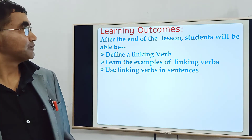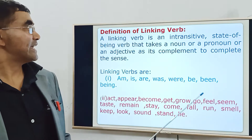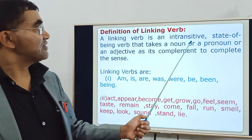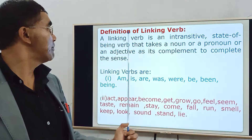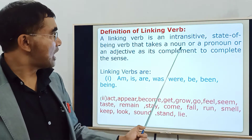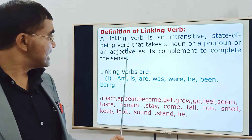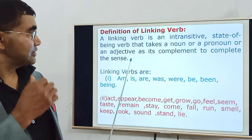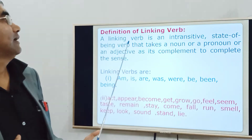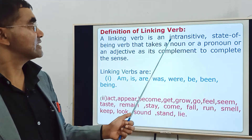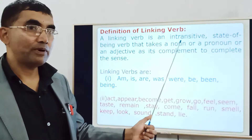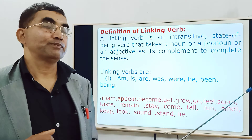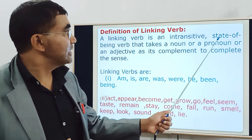Let's see the definition of a linking verb. A linking verb is an intransitive state of being verb that takes a noun, a pronoun, or an adjective as its complement to complete the sense. If we analyze this definition, we will find some characteristics. A linking verb would be an intransitive verb — that means it doesn't take an object — and it would also be a state of being verb.